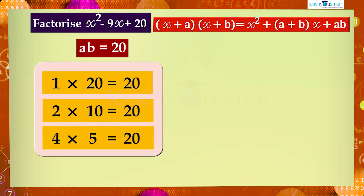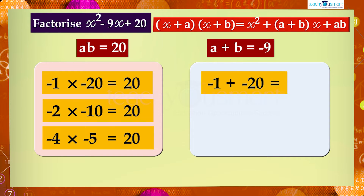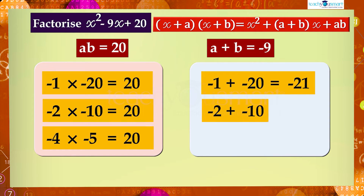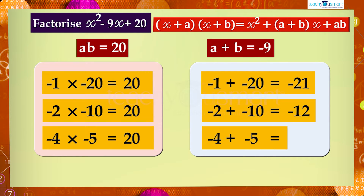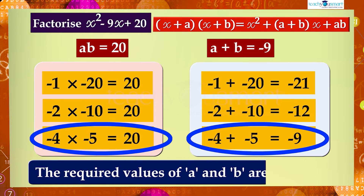We also have a + b = −9. Here the sum is negative and the product is positive, so a and b are both negative. Using the possible values: (−1) + (−20) = −21; (−2) + (−10) = −12; (−4) + (−5) = −9. From this it is clear that the required values of a and b are −4 and −5.